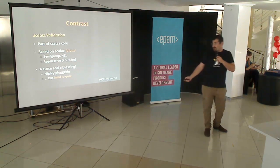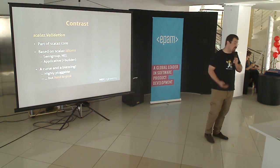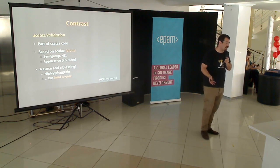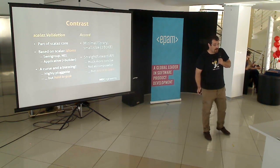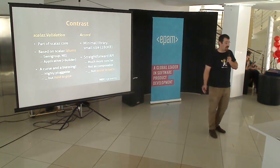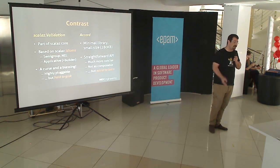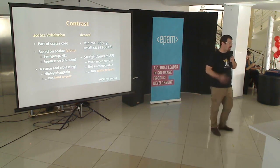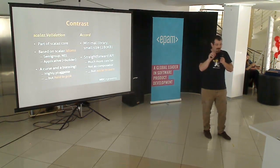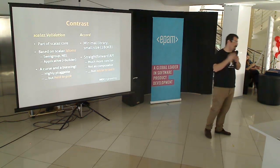On the other hand, ScalaZ validation is actually very powerful because it's so abstract — you can plug it in and do all sorts of interesting things with it. But once again, you have to learn the stack. Accord, in terms of design principles, is designed to be extremely minimalistic — it has literally zero external dependencies, it's very small, it's got a very straightforward API. It's domain-specific: it deals with validation. It's not a cute construct on top of a very massive library of concepts that you may or may not be familiar with.